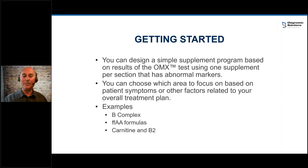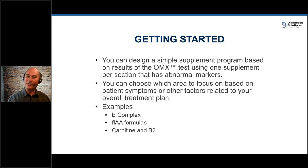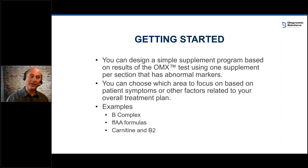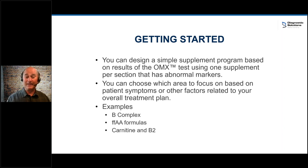Rather than getting complicated and looking at all 12 tryptophan markers, look at the group and say, I'm not going to break this down into each individual marker. I'll just say, there's a problem with the brain, so I have a brain supplement I'm going to use. Or: there's a problem with the mitochondria — I may not know the difference between succinate dehydrogenase and what it means when fumarate is high, but I know there's a mitochondrial product I can use. If you just have one or two simple supplements for each section of the test, you're going to get really great results.